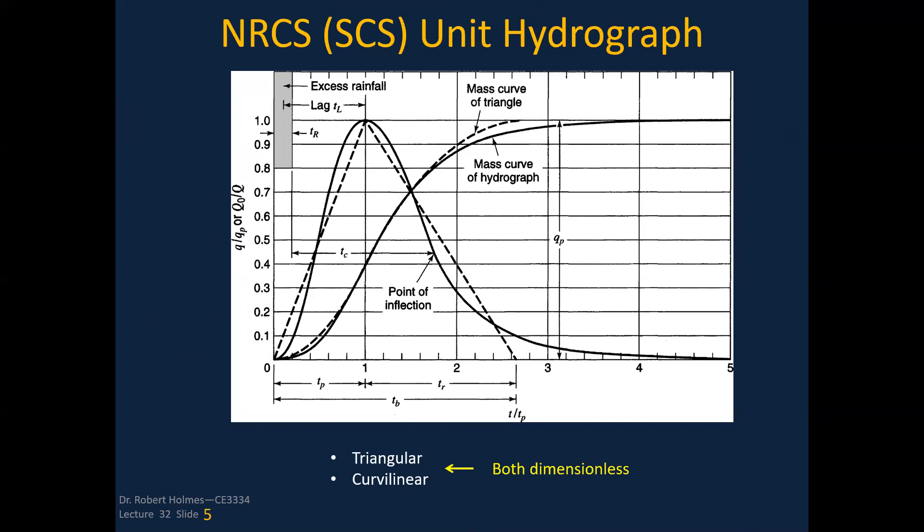The NRCS unit hydrograph method: you can ignore the cumulative hydrograph and just pay attention to the actual unit hydrographs. You have a triangular version and the curvilinear. Both of these are dimensionless. You'll notice that the units are in q over q_p, where q_p is the peak and q is the values in between anywhere below the peak. You'll notice at the peak q over q_p is one and it's below that anywhere else. The time is a relationship between time over time sub peak t_p. You can notice that ratio is equal to one at the peak.